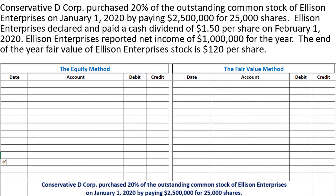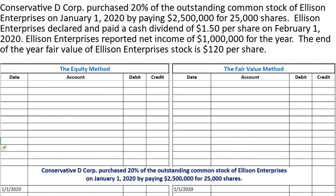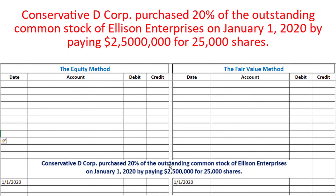The first journal entry is for the acquisition of stock, which is essentially the same for either the equity method or the fair value method. In either case we are getting a long-term investment, so we debit long-term investments for 2.5 million dollars and credit cash also for 2.5 million dollars.